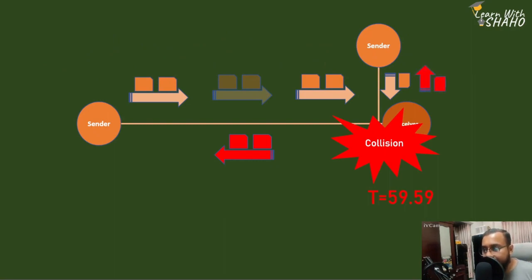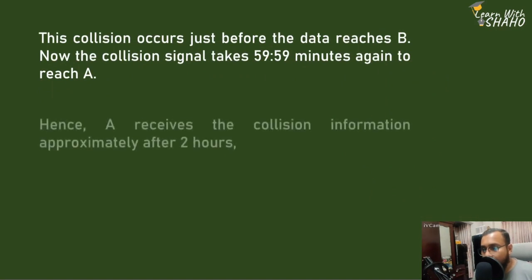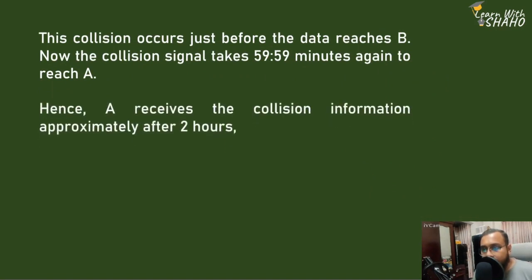The collision signal takes approximately 59 minutes to travel back to the sender. So the sender receives the collision information after approximately two propagation times total — that is, the total time is 2 × TP (propagation time). When a collision occurs, devices share a random wait time before retransmitting.